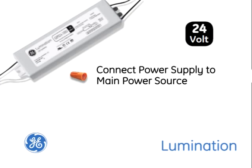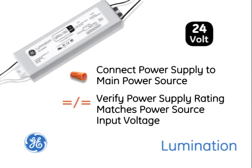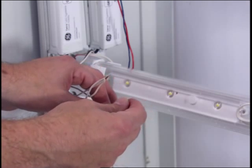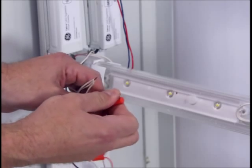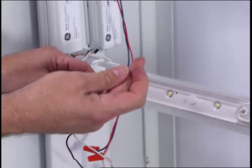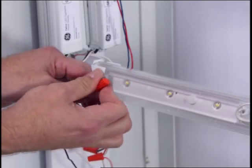Now connect the power supply to the main power source. Verify that the power supply rating matches the power source input voltage. Connect the black AC line to the black input wire of the power supply. Connect the white neutral line to the white wire of the power supply.